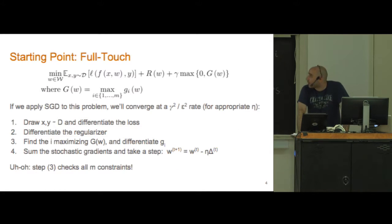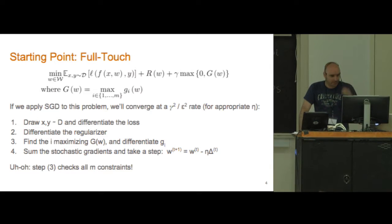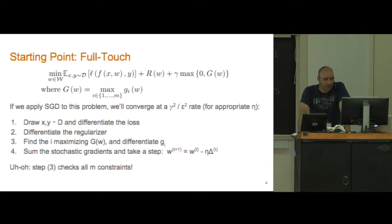Since we've moved our constraints into the objective, we now have an unconstrained problem. We can just use SGD to optimize it. The obvious way to do this is to choose an x and y from our distribution, differentiate the loss, and that gives us a stochastic gradient of the first term.